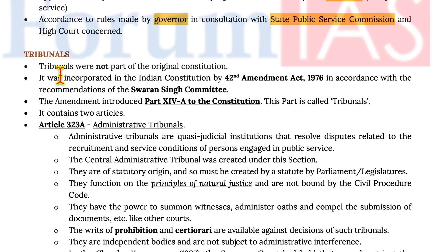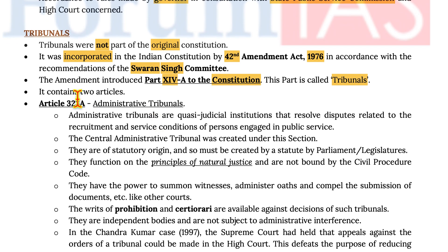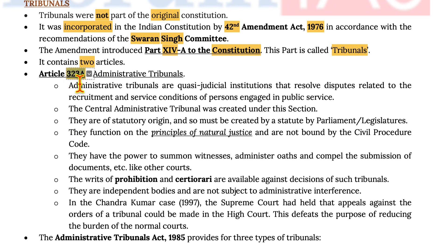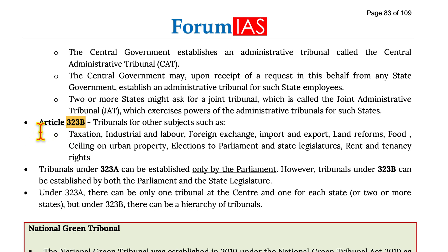Moving on to tribunals. Tribunals were not a part of the original constitution. They were incorporated into the Indian constitution by the 42nd Amendment Act of 1976 in accordance with the recommendations of the Swaran Singh Committee. The amendment introduced Part 14A to the constitution, called Tribunals, which contains two articles: Article 323A — administrative tribunals — and Article 323B — tribunals for other subjects.